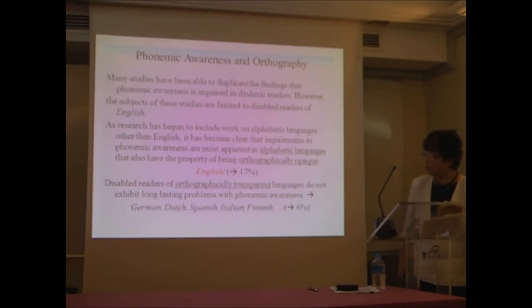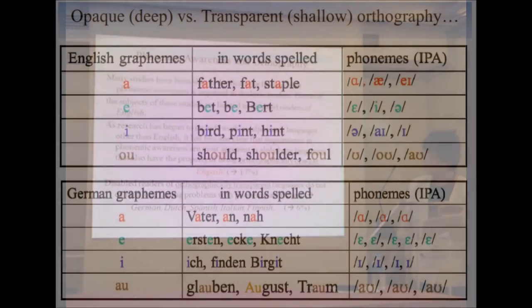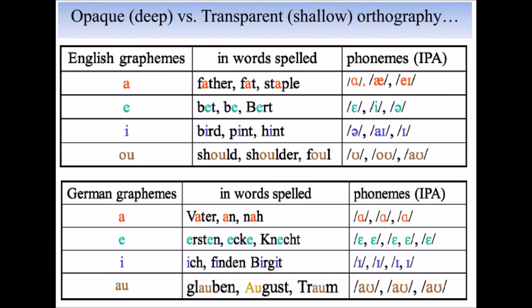Disabled readers of orthographically transparent languages do not exhibit long-lasting problems with phonemic awareness. So, unlike English, German, Dutch, Spanish, Italian, Finnish, the prevalence goes from 70% down to 6%. So this is opaque versus transparent orthography comparison.